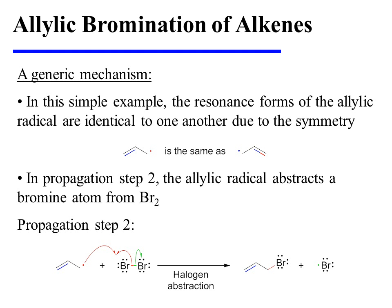In this simple example, the two resonance forms of the allylic radical are identical to one another due to the molecule's symmetry. Consequently, either may be used in propagation step 2, and the same product will result either way. In propagation step 2, the allylic radical abstracts a bromine atom from Br2, yielding the allylic bromide product and a new bromine radical, which can enter back into propagation step 1, continuing the cycle and making this a chain reaction.